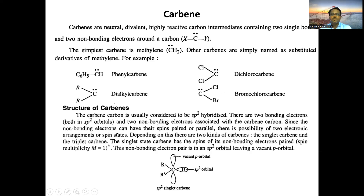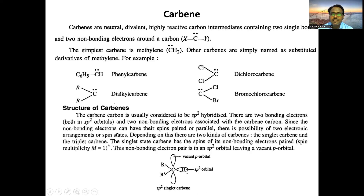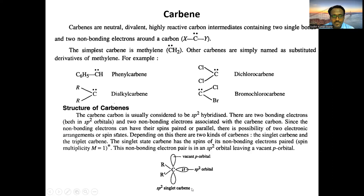Regarding the structure of carbenes, they are usually sp2 hybridized. From the orbital structure we can see this is a singlet carbene because both non-bonding electrons have opposite spin and are present in the sp2 hybrid orbital. This is therefore called the sp2 singlet carbene.